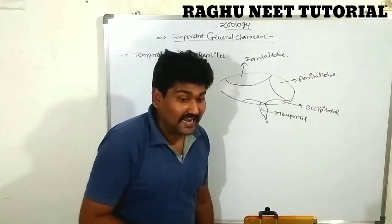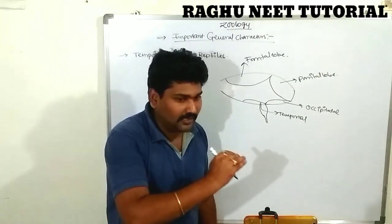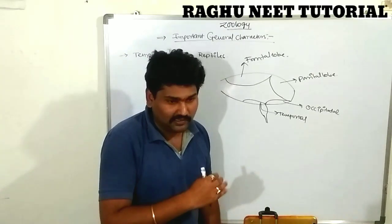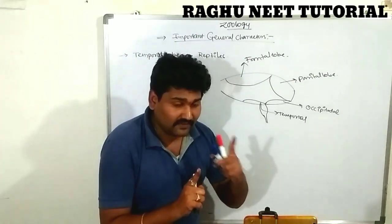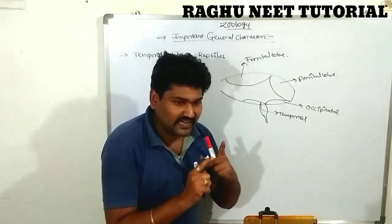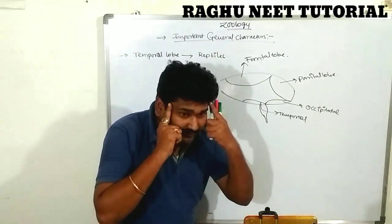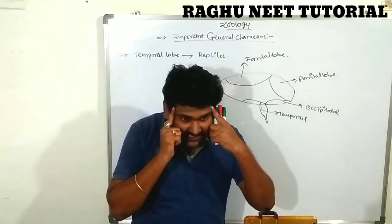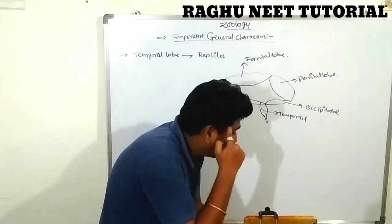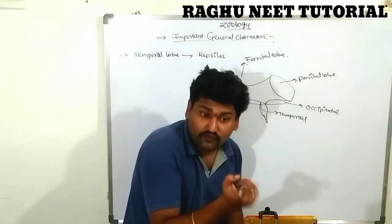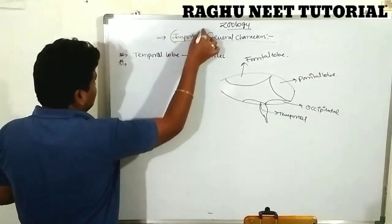Amphibians lack the temporal lobe, but reptiles have the presence of the temporal lobe — this is a gradually developing characteristic feature of reptiles. Additionally, on either side of the cranium, forces — called fossae — are present. This is a very important and special character of Reptilia.